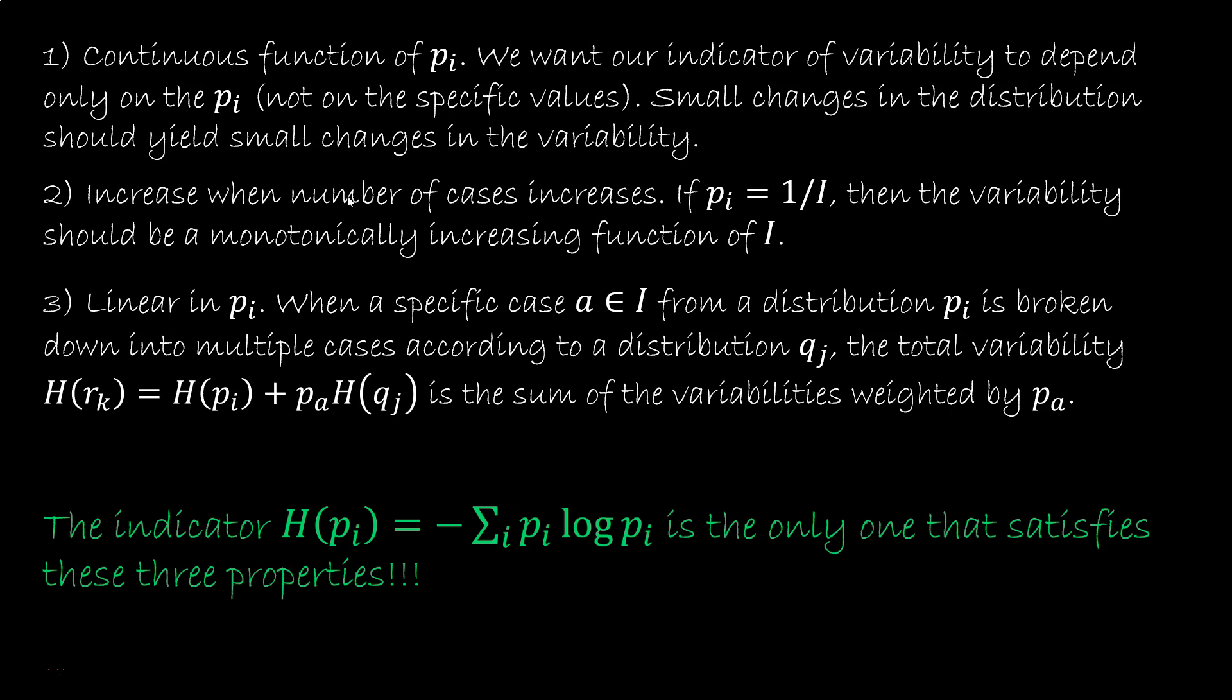So these are the three properties that we require. If you stop and think about them, you can see that they are very reasonable properties. The first two, you can't really do without. If you don't satisfy them, you don't have an indicator of variability. The third one is not strictly necessary, but it makes the expression a lot more useful.